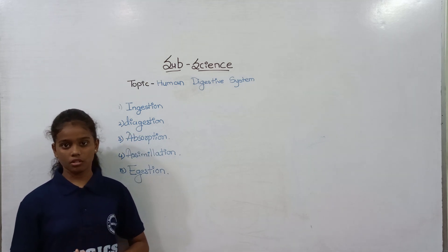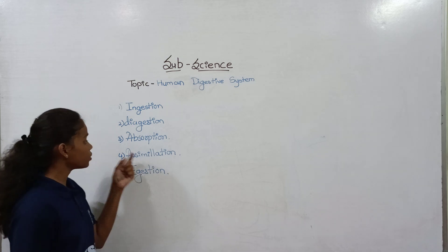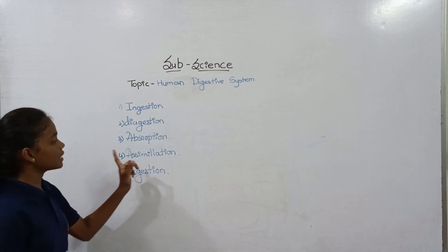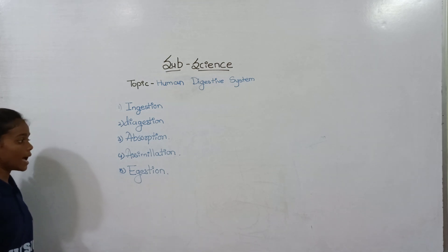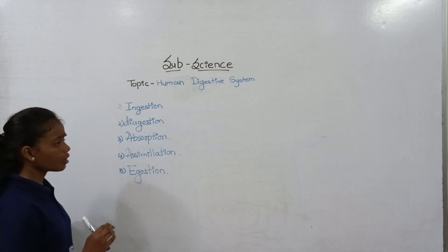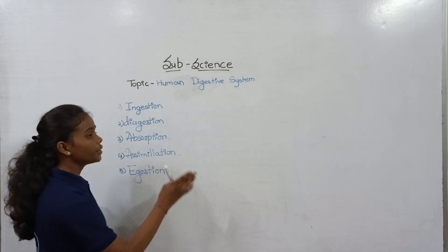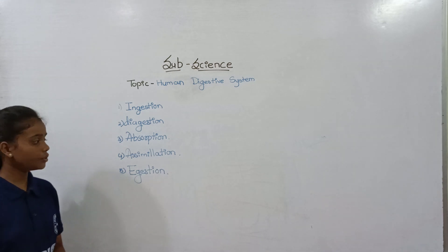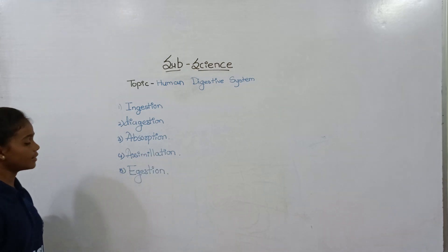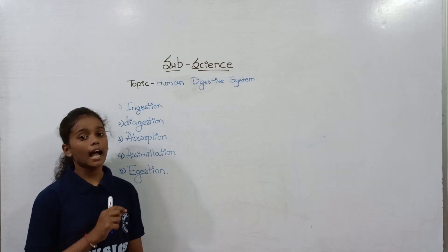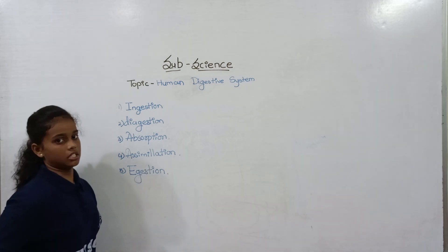During absorption, some nutrients are also absorbed. Then in assimilation, this digested food goes into the cells where it is used. Finally, the undigested food is taken out from our body, which is called egestion.